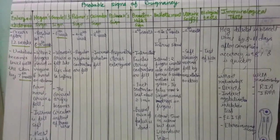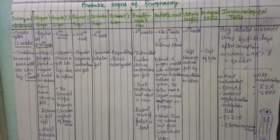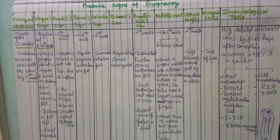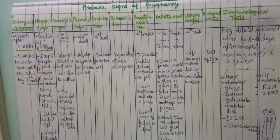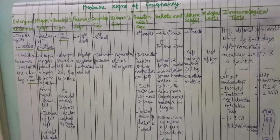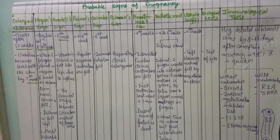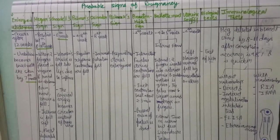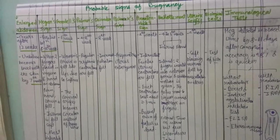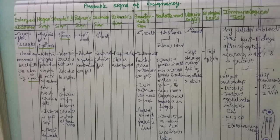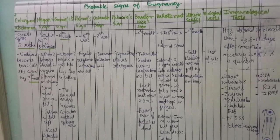The probable signs of pregnancy include almost 11 signs: enlarged abdomen, Hegar sign, Goodell sign, Palmer sign, Osiander sign, Piskacek sign, Braxton Hicks sign, ballottement, uterine souffle, biological tests, and immunological tests. Enlarged abdomen occurs after 12 weeks; the umbilicus becomes level with the skin by the 7th month.